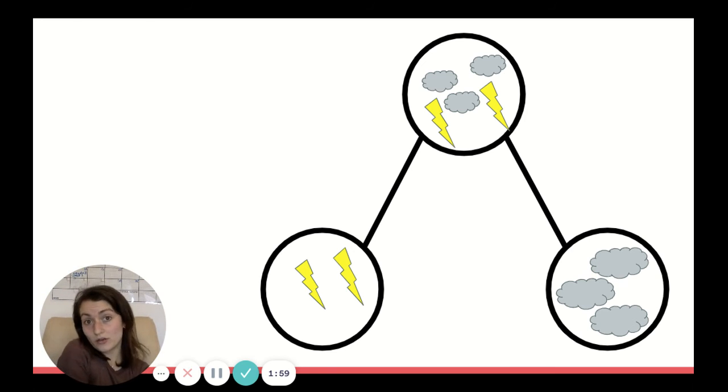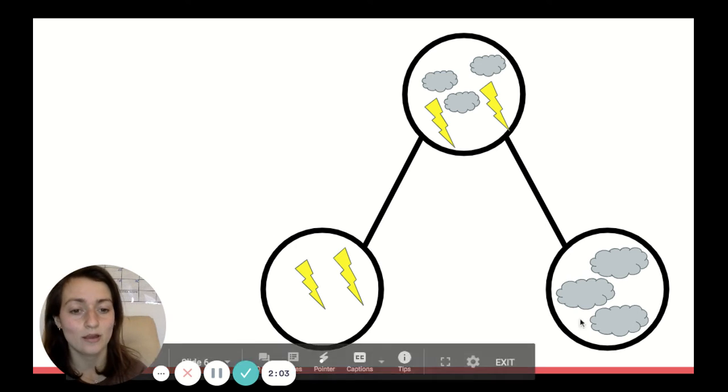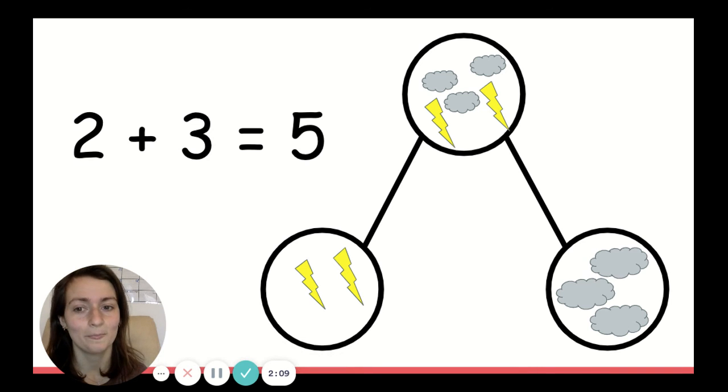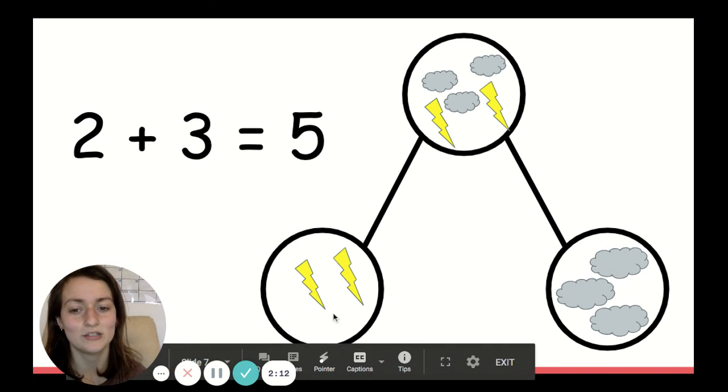So this is just to show you how you can tell a story and represent it on the number bond. I had three clouds, then two lightning bolts hit, and then I had five things in the sky all together. And of course, I can represent that with our number bond. Two and three is five.